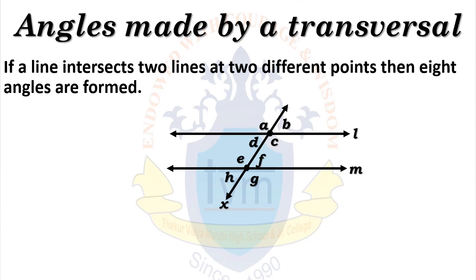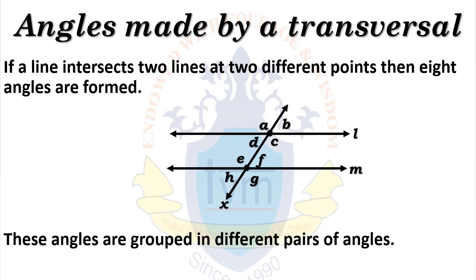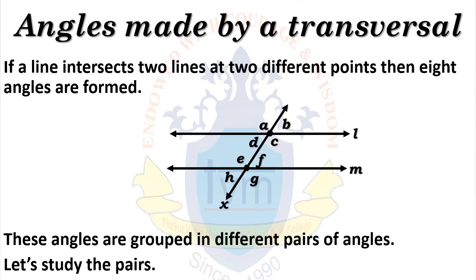Make a note: if any transversal intersects two lines at different points, then eight angles are formed. These angles are grouped into different pairs of angles. Let's study the pairs.